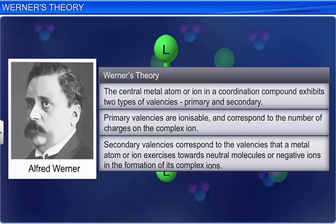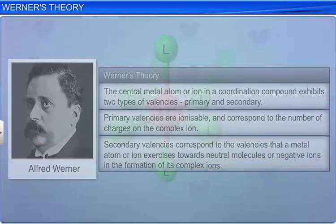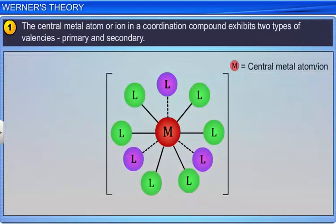The first postulate is that the central metal atom or ion in a coordination compound exhibits two types of valencies: primary and secondary.